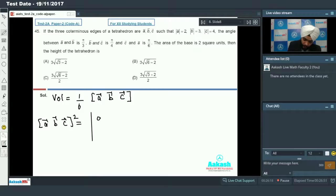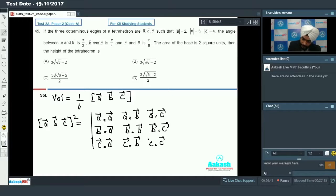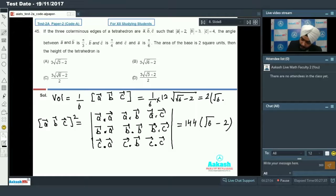Volume of tetrahedron is 1 by 6 box ABC. We can't directly calculate box ABC, but we can evaluate box ABC squared, which equals the determinant of A dot A, A dot B, A dot C; B dot A, B dot B, B dot C; C dot A, C dot B, C dot C. This will come out to be 144 into root 6 minus 2. So volume will be 1 by 6 times the square root of that, which is 2 into under root 6 minus 2.